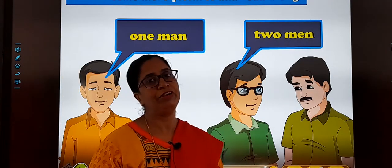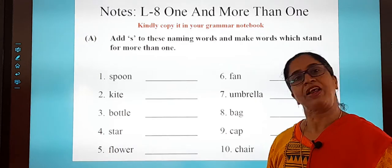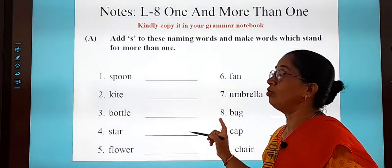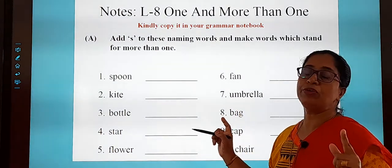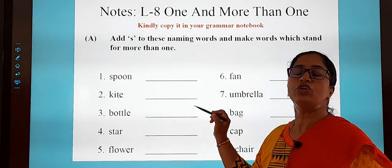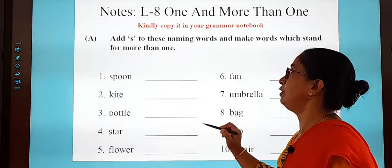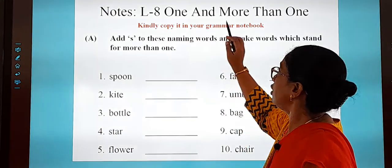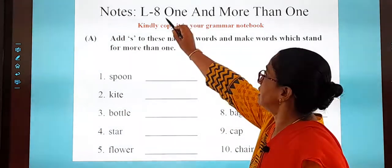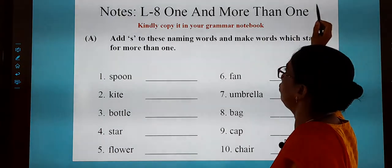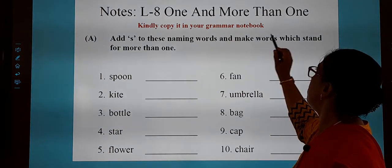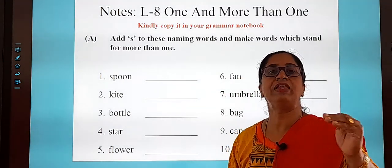So now we will do the exercise. A note: in the previous lesson we gave you the textbook exercise and I also sent you a worksheet. Now this exercise you are going to copy in your notebook — kindly copy it in your grammar notebook, neat and in good writing. You have to write the lesson number and the title: One and More Than One. Add S to these naming words and make words which stand for more than one.